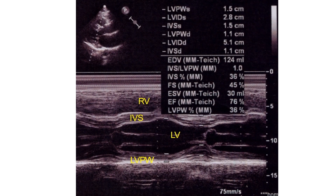LVPWS – left ventricular posterior wall systolic. LVIDS – left ventricular internal diameter systolic. IVSS – interventricular septum systolic. LVPWD – left ventricular posterior wall diastolic. LVIDD – left ventricular internal diameter diastolic. IVSD – interventricular septum diastolic.